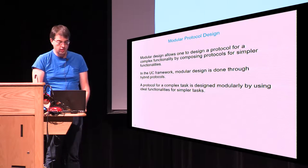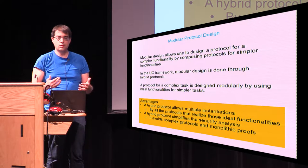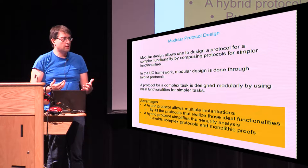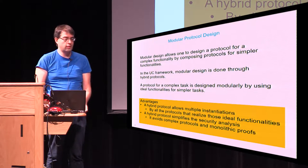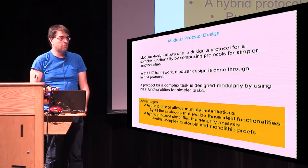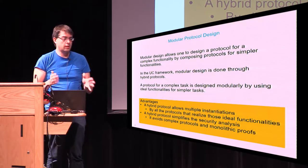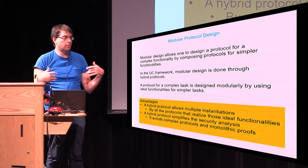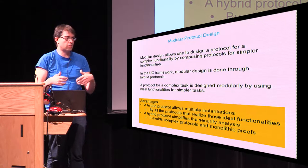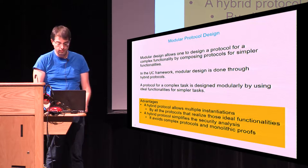Designing protocols this way has several advantages. A hybrid protocol allows for multiple instantiations because you can replace a call for any ideal functionality by any of its secure realizations. It also allows for more structured proofs, because it is better to have proofs for secure protocols for each of the ideal functionalities and then prove secure composition to realize the complex task, rather than having one monolithic proof for a complex protocol.